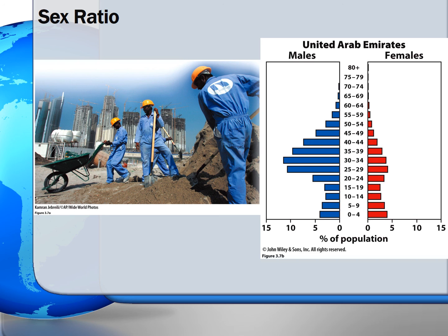The photo shows laborers recruited by the United Arab Emirates for its industries, creating a population pyramid shown on the right. For the entire population, the sex ratio is 219 to 100, and the sex ratio for 15 to 64 year olds rises to 274 to 100.